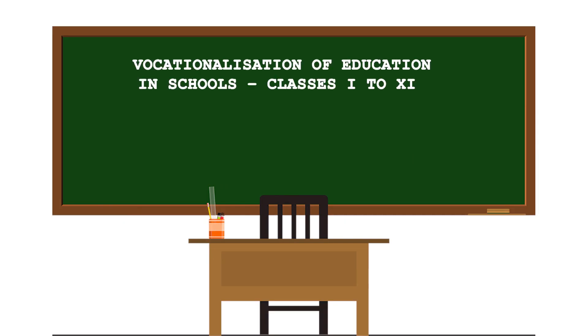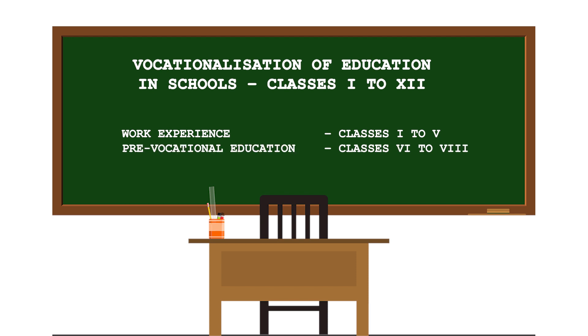Vocationalization of education has been divided into three parts: the first is work experience from classes one to five, the second is pre-vocational education from classes six to eight, and the third is vocational education from classes nine to twelve. In classes nine to ten, vocational subjects are offered based on job roles in different sectors.